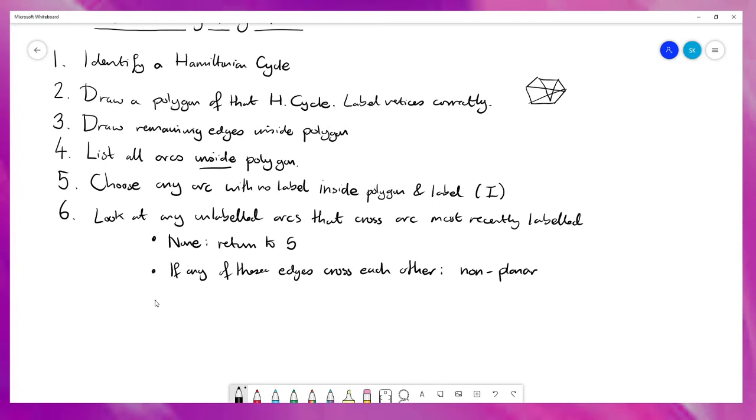If none of them cross each other then you label those edges with opposite to most recent label type. So if you've just written down an I you'll label them O for outside. If you've just labeled them O you'll label them I for inside. At this point you check if all edges are labeled then the graph is planar.